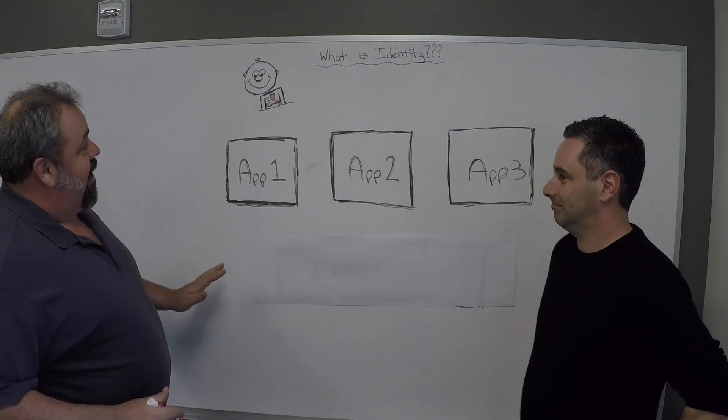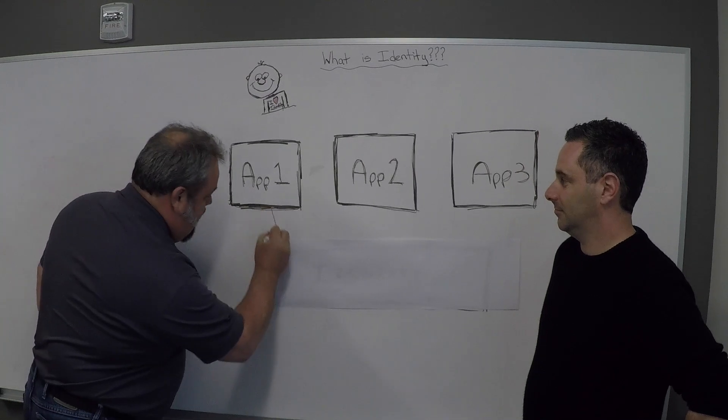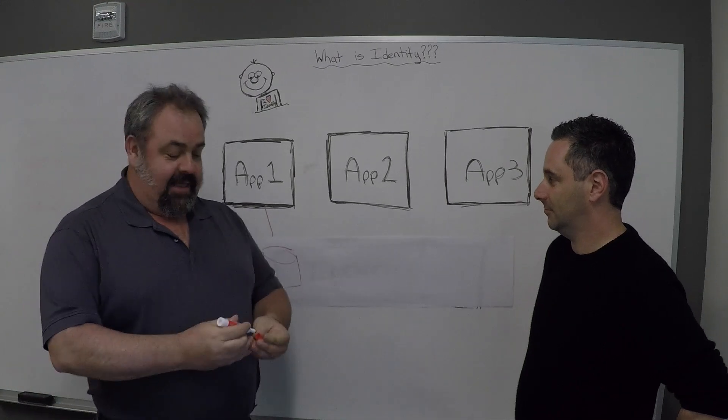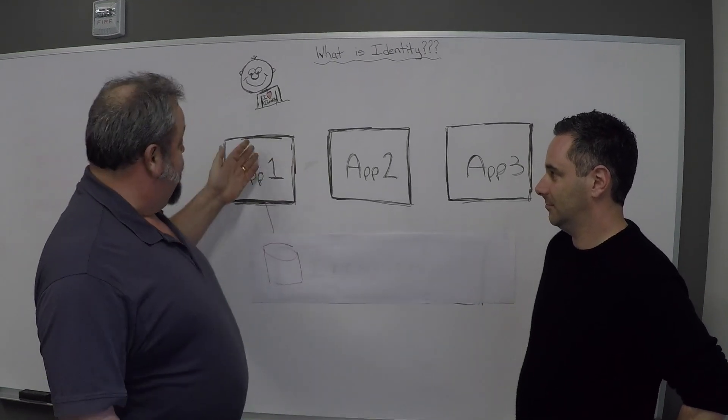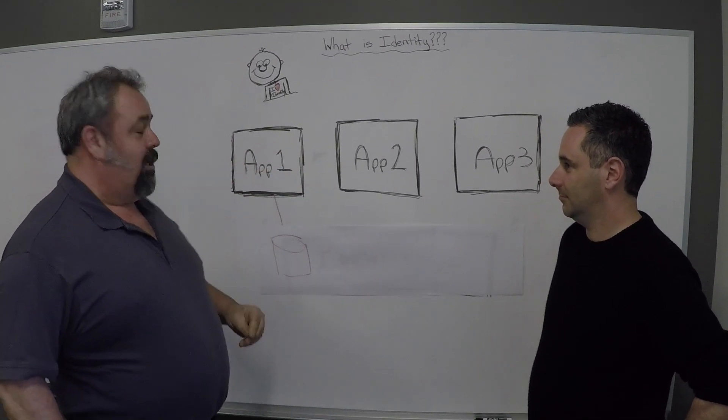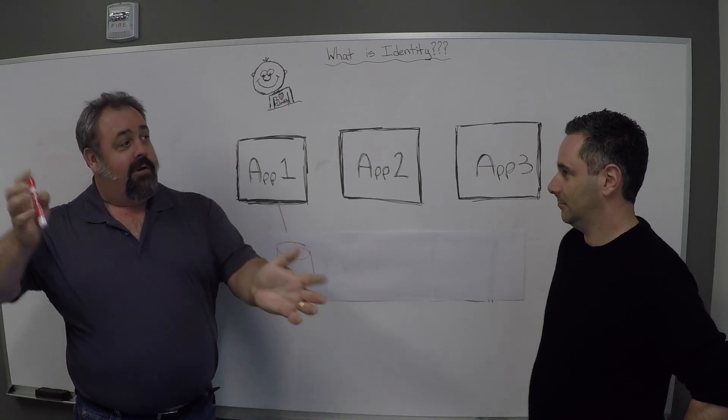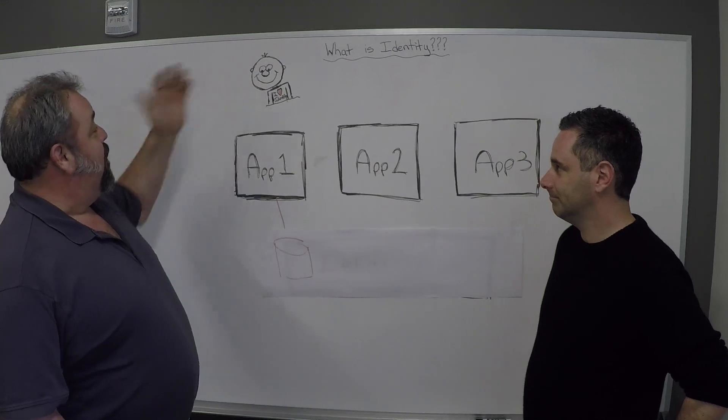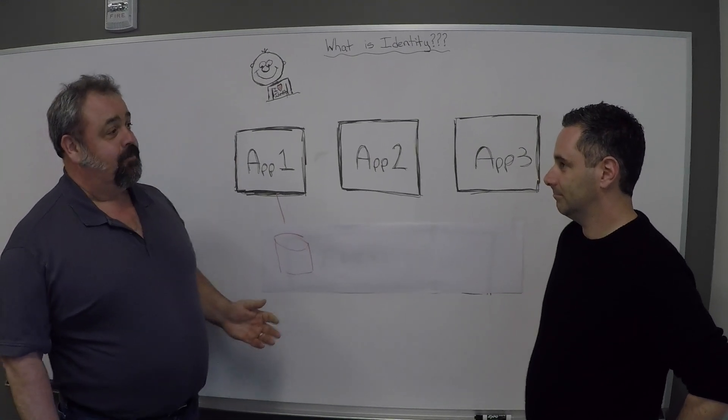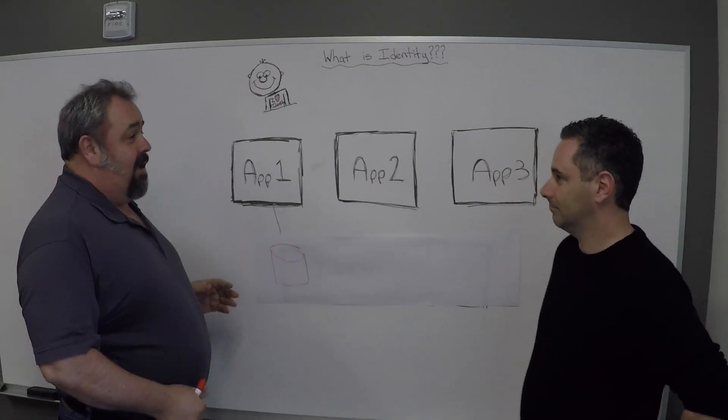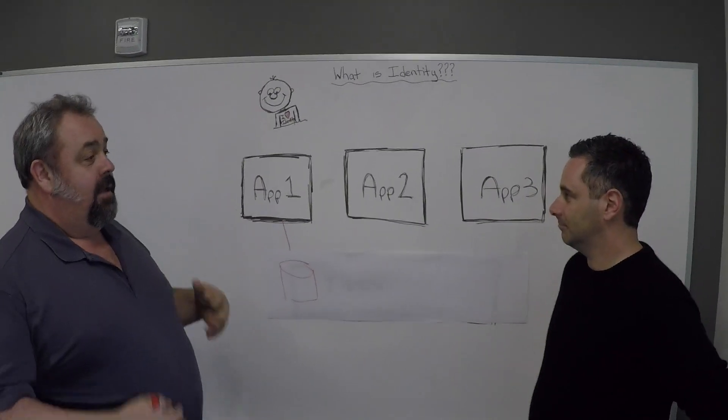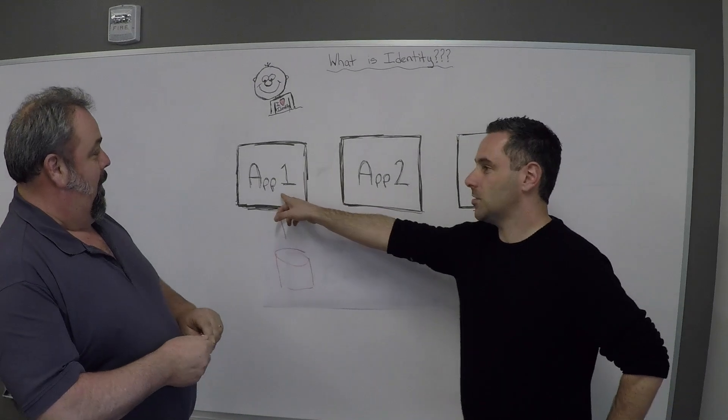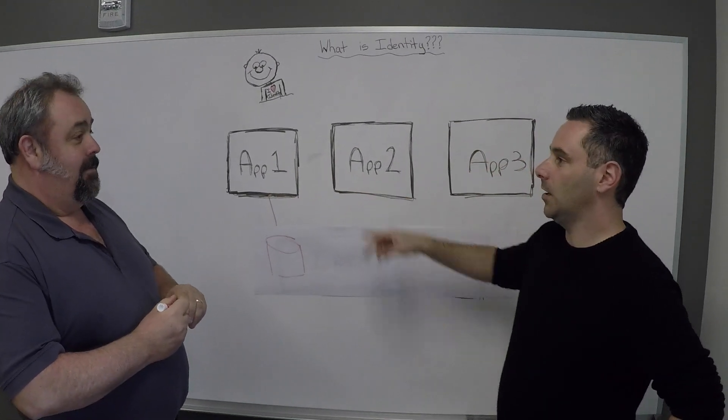So traditionally, what ends up happening is they have a big database with all the information about that user. And so now when you log into the app, you can get your email and all of these things that this application knows about you and works with you. And we have a happy user out here. And that's really what the identity is there for. It's so that this digital app can know things about you and deliver content to you. But wait a second. That's just one app. If I want another app, what do I have to do in that old world?